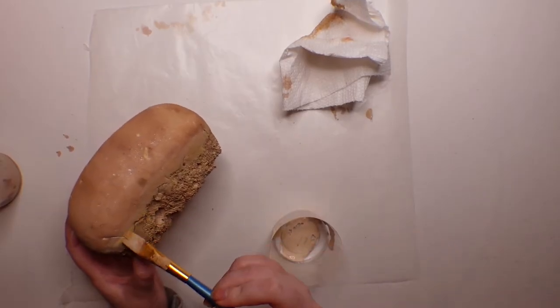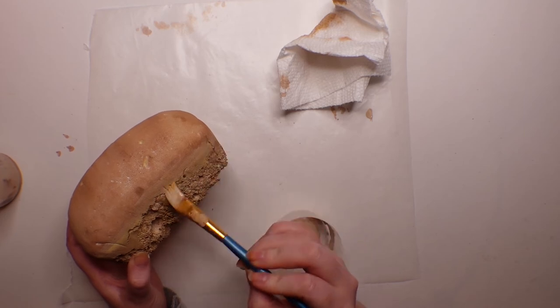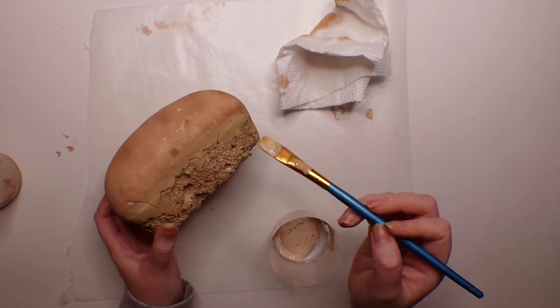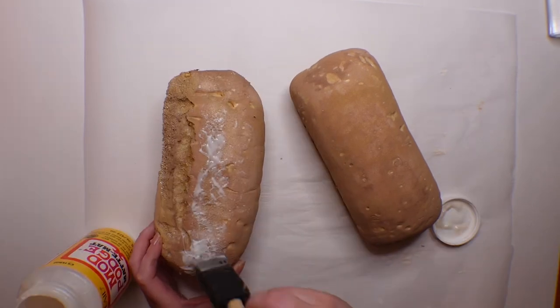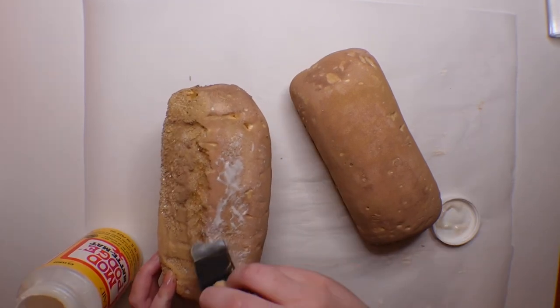Then a lot of breads just have a line around the perimeter, so I'm just adding that to give it a little bit more dimension. And then to seal everything in, I'm using a matte Mod Podge and I'm stippling it on to give it more texture.